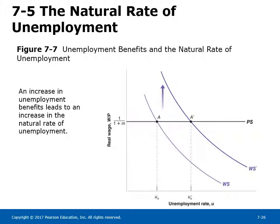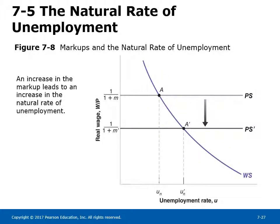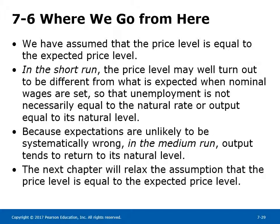Figure 7-7 shows the impact of an increase in unemployment benefits on the natural rate of unemployment. An increase in unemployment benefits (Z) shifts the wage-setting curve upward from WS to WS prime. Equilibrium moves from point A to A prime, and the equilibrium unemployment rate increases from UN to UN prime. Figure 7-8 shows the impact of an increase in markup on the natural rate of unemployment. An increase in markup M shifts the price-setting relation down from PS to PS prime. Equilibrium moves from point A to A prime along the given wage-setting curve, and equilibrium unemployment increases from UN to UN prime.